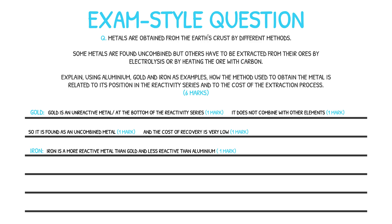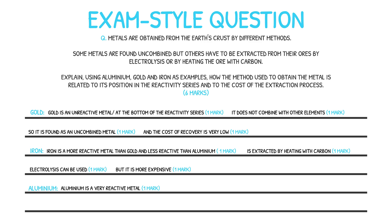Iron is next in the reactivity series — it is more reactive than gold but less reactive than aluminium. Both electrolysis and heating with carbon can be used to extract iron from its ore; however, heating with carbon is preferred as it is much cheaper. Finally, aluminium is the most reactive of the three metals. Aluminium is more reactive than carbon, so it cannot be extracted via heating with carbon. Therefore, electrolysis must be used to extract aluminium from its ore, despite the process being very expensive.